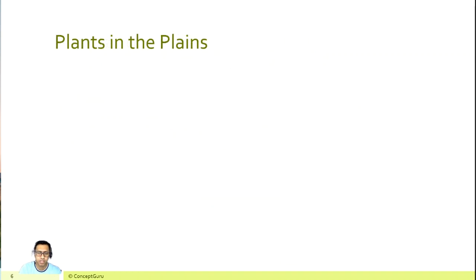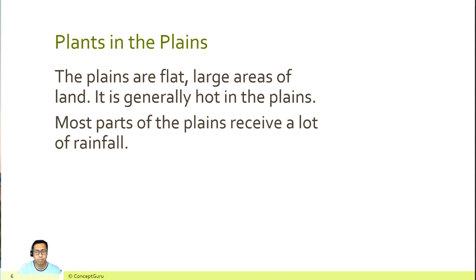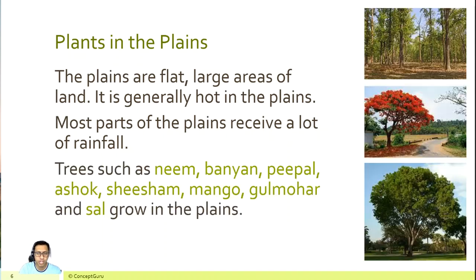We will start with plants in the plains. The plains are flat, large areas of land. It is generally hot in the plains and most parts receive a lot of rainfall. Trees such as neem, banyan, peepal, ashok, shisham, mango, gulmohar, and sal grow in the plains.